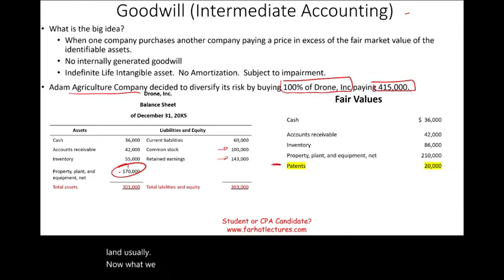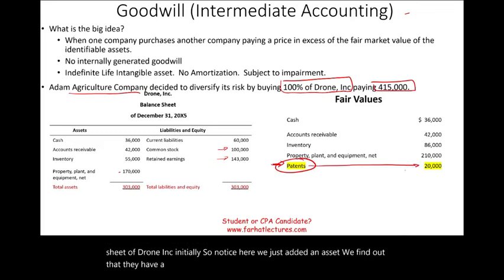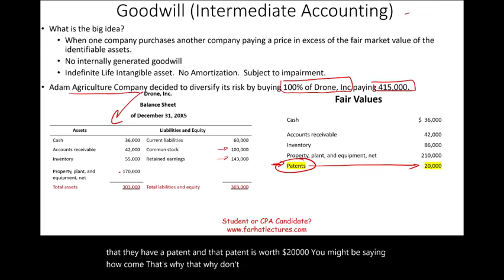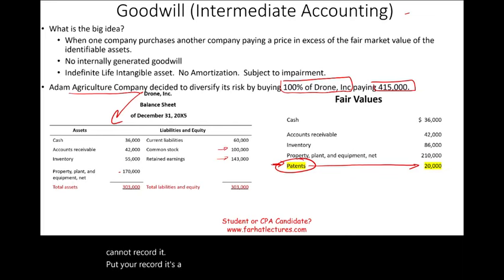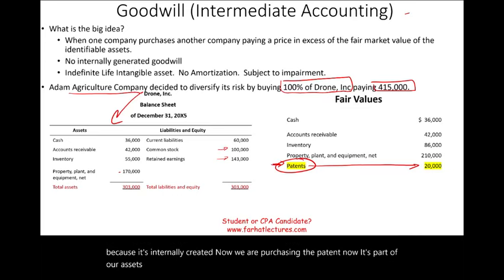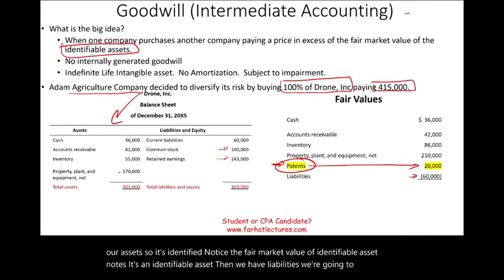We also identified an asset not on Drone Inc.'s balance sheet: a patent worth $20,000. The reason it wasn't recorded is that it was internally created — internally created patents cannot be recorded, or are recorded at a small amount. Now that we are purchasing it, it becomes an identifiable asset. Liabilities are assumed to have the same fair value as book value.